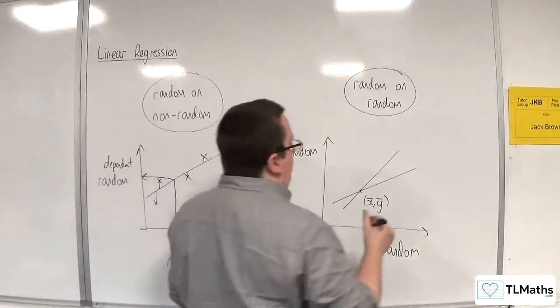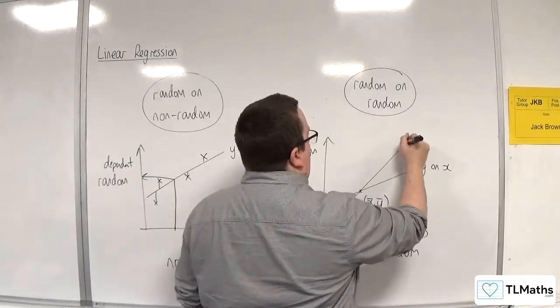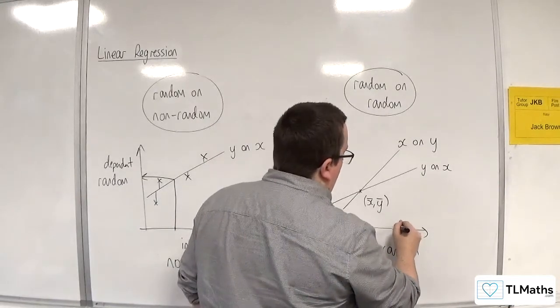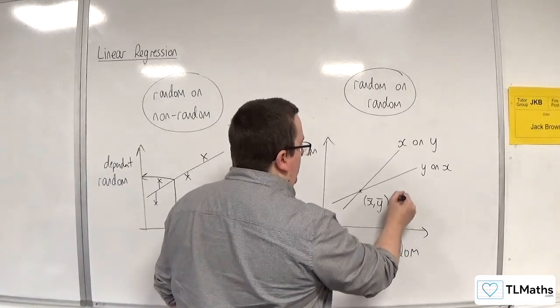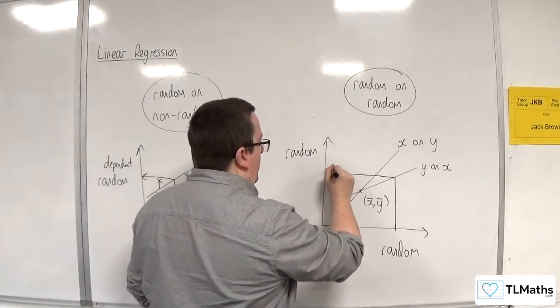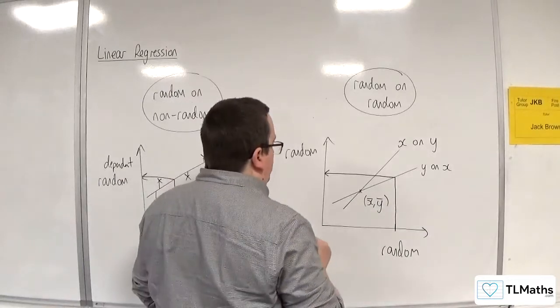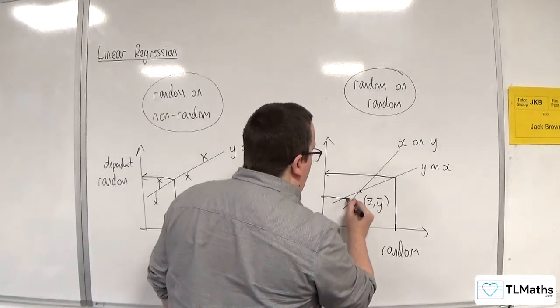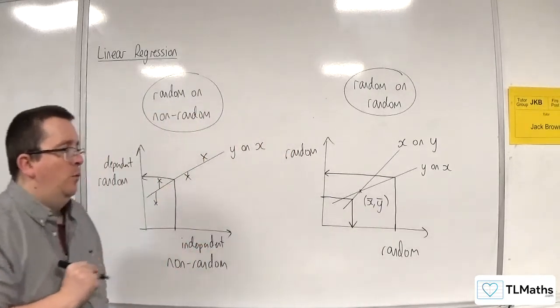And if this is your y on x, and this is your x on y, if you have an x value and you want to predict the y value, then you can go up to your line, your y on x line, and then find the corresponding y value. If, on the other hand, you have a y value and you want to predict the x value, you go to the x on y regression line and then read off your value that way.